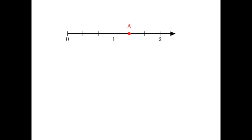If we want to know what point A is on the number line, we can first look and see how many pieces the unit — the gap between zero and one — has been divided up into. We can see it's been divided up into three pieces, so we're dealing with thirds. How many thirds have we moved when we get to A? We've gone one-third, two-thirds, three-thirds, four-thirds. So A is four-thirds.